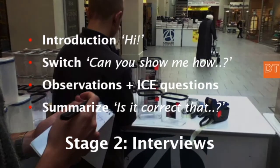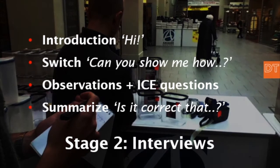You do the actual interview at the place where people do their task, their work. Like every interview, you start with an introduction — who are you, who is the other person, can you explain a little bit what your work is all about. Then there is this crucial question to switch: 'Can you show me how you do it?' So rather than just doing an interview you ask them to show what they do and how they do it, and from there on you continue using 'show me how you do it.'